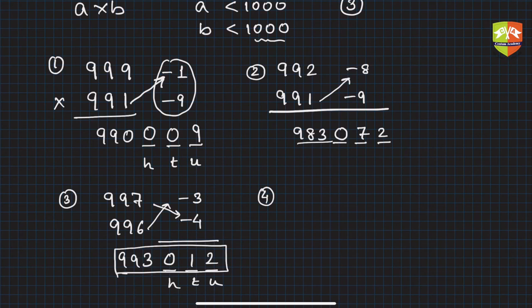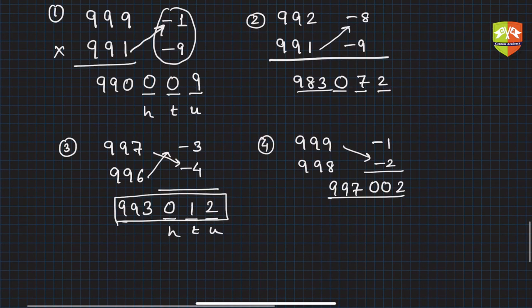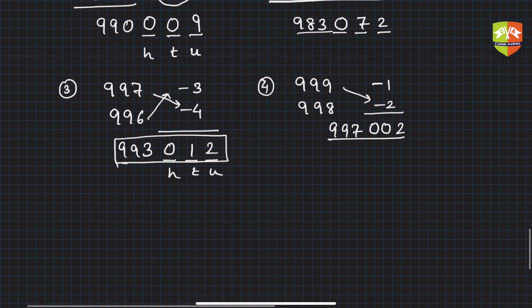Let's take another one: 999 × 998, huge numbers. This is -1 and -2, so their product is 2, but you have to write 002 for the three HTU digits—hundreds, tens, and units. Then perform this operation: 997. Done. This is the product.